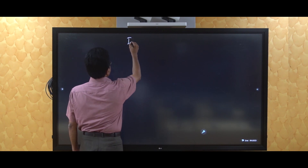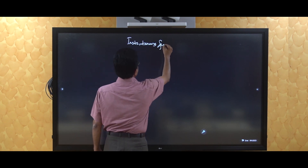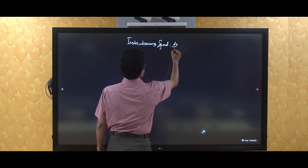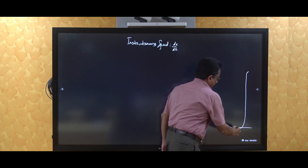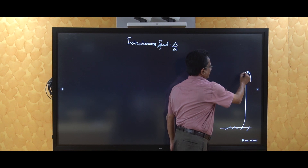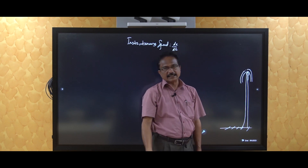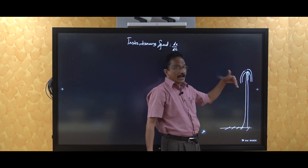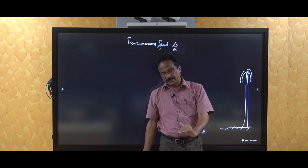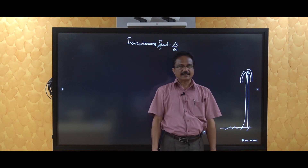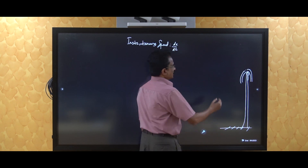We discuss instantaneous speed. A very common observation is that a falling object falls with increasing speed. For every second, the speed increases at the rate of 9.8 m per second — at time 0, the speed is 0; after the first second it is 9.8; after the second second it is 19.6 m per second. We approximate this as 10 m per second squared, which is called acceleration due to gravity.